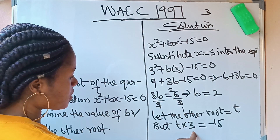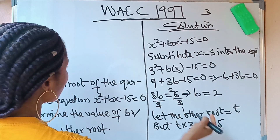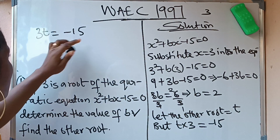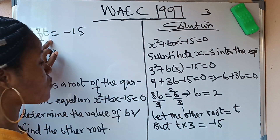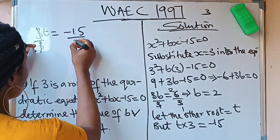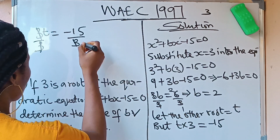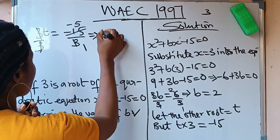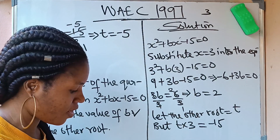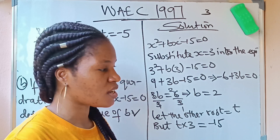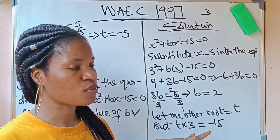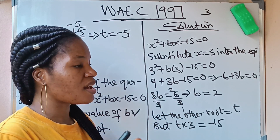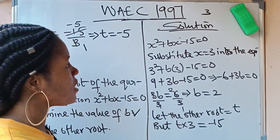We have 3t equals negative 15. Dividing both sides by 3: 3 divides 3 leaving t, and negative 15 divided by 3 gives negative 5. So t equals negative 5. If this is the first time you're coming across my channel and you're already enjoying the content, please subscribe and click the notification bell so you'll be notified whenever I upload new videos.